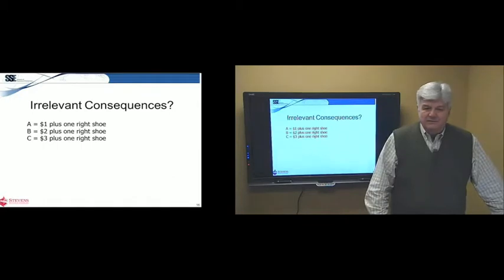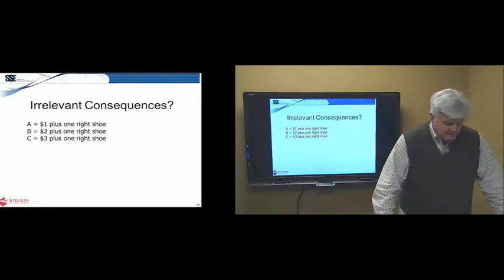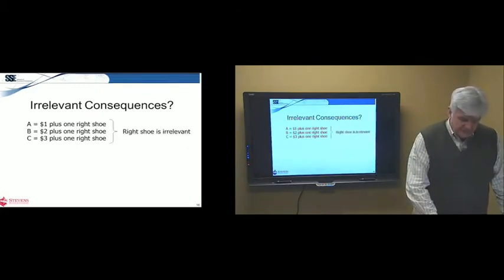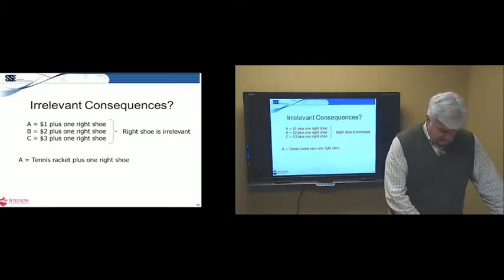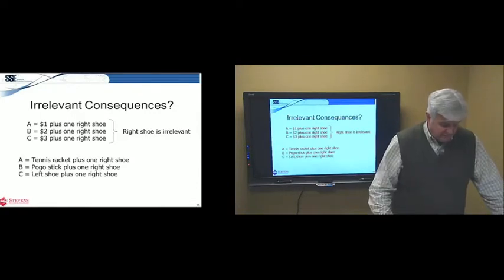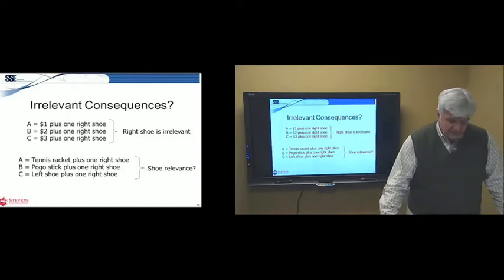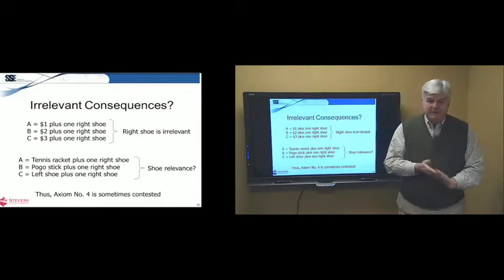Now, this one of eliminating irrelevant consequences, let's look at that. So, let's say I have A, B, and C here, and pretty clear you'd prefer C to B and B to A. What about the right shoe? Well, you're going to get a right shoe anyway, so maybe it doesn't matter. So, the right shoe's irrelevant. Now, let's try another one. We have tennis racket and right shoe, pogo stick and right shoe, left shoe plus right shoe. Well, now, the common attribute has an impact on our preferences, doesn't it? So, that's why some people will question axiom four sometimes.